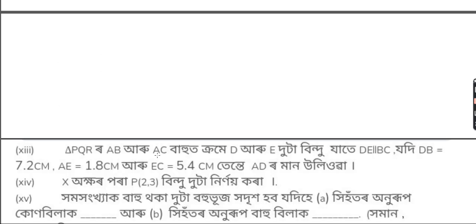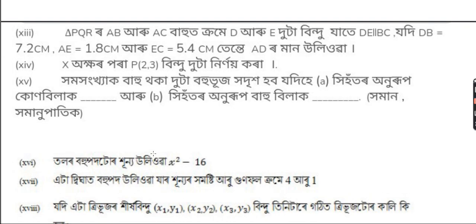Next one. Triangle PQR, ABRO, AC, bahut korme, D, R, E duta bindu jatte, DE homaltral BC. Jody DB is equal 7.2 cm, AE is equal 1.8 cm, EC is equal 5.4 cm, tente AD muli huga.